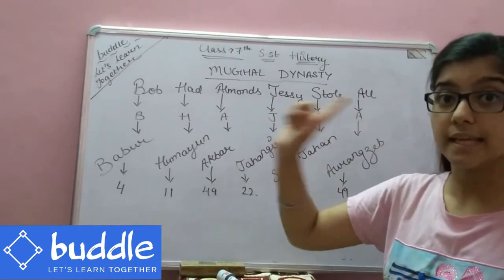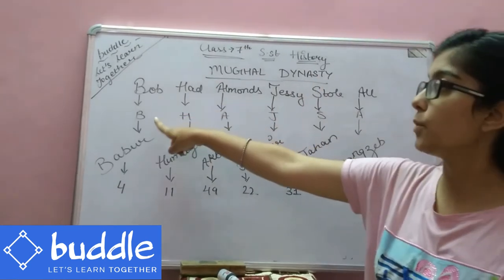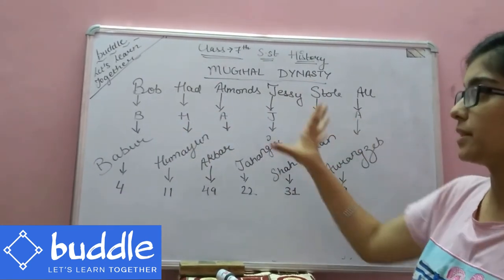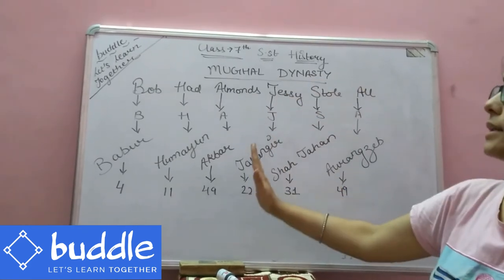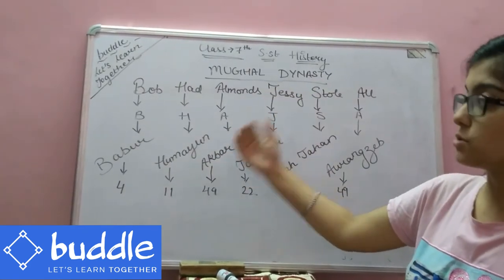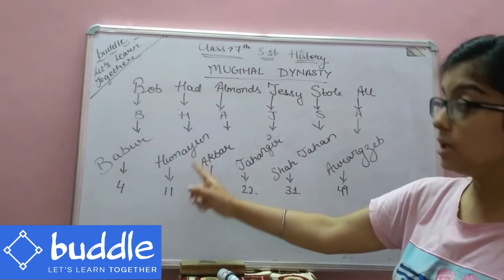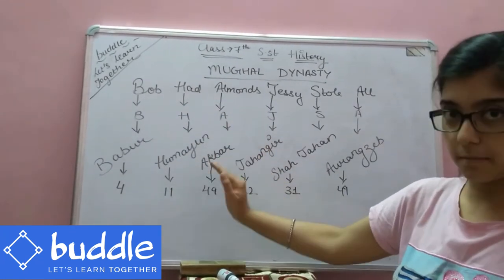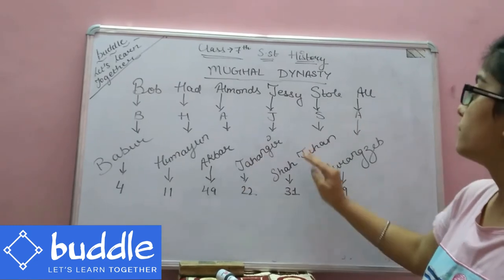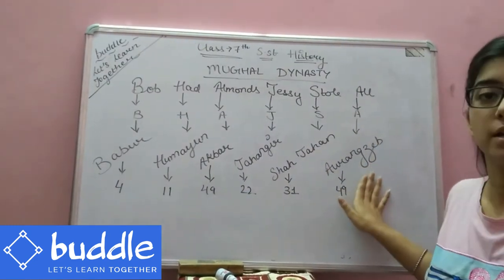We will take the initials of all these words, giving us B-H-A-J-S-A. These correspond to the rulers: first is Babur, second is Humayun, third is Akbar, fourth is Jahangir, fifth is Shah Jahan, and sixth is Aurangzeb.